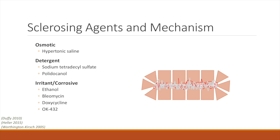Sodium tetradecyl sulfate (STS) and polidocanol are two examples of detergent sclerosing agents. STS is a synthetic long-chain fatty acid that has been used for over 60 years. Polidocanol is a more moderate form of ethanol, known to have a low risk of complications and can also be used as a foam.